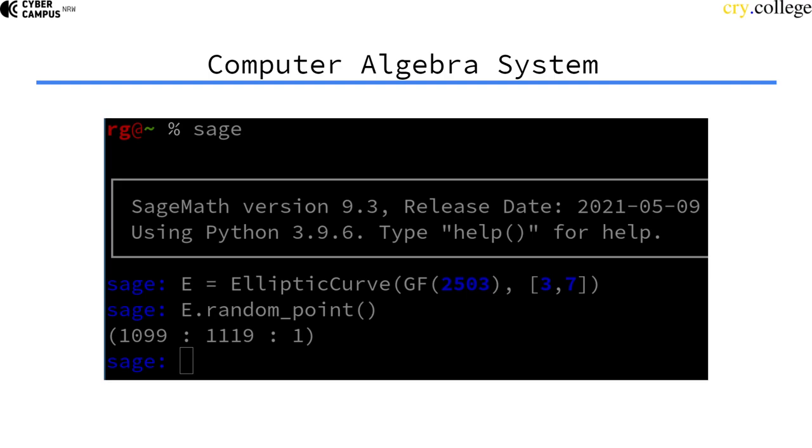There I can define an elliptic curve with modulus 3503, and then I can generate a random point on this curve.